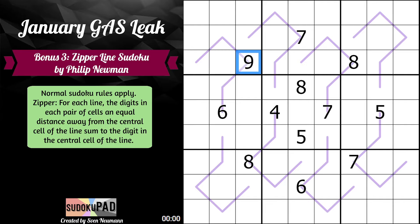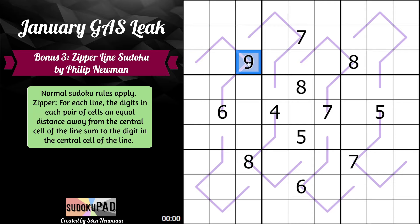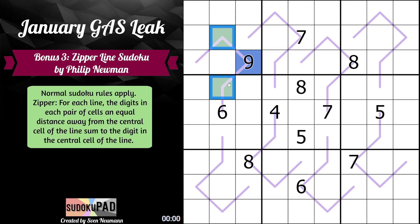Row three, column three is the central cell of this five-length zipper line. If we go an equal distance away — one step in each direction from the central cell — we look at row two column two and row four column two. These two digits, when summed together, will equal nine. So this would be one-eight, two-seven, four-five, in some order.